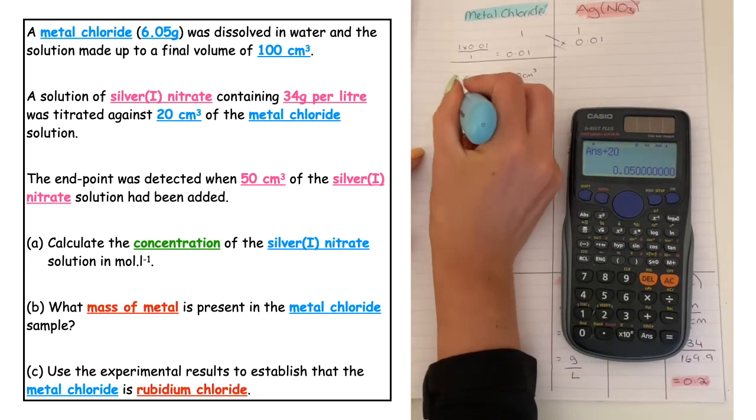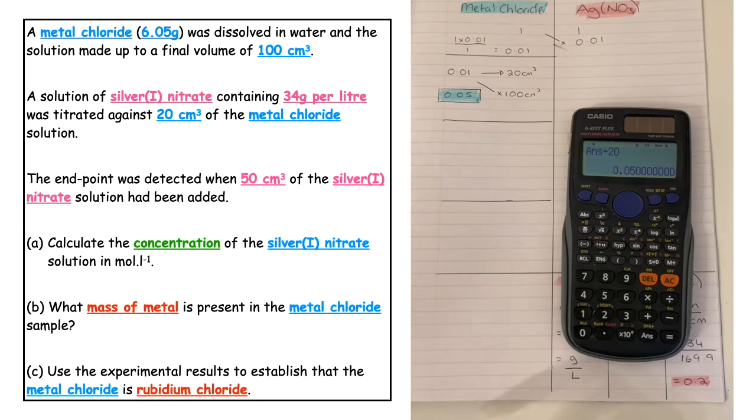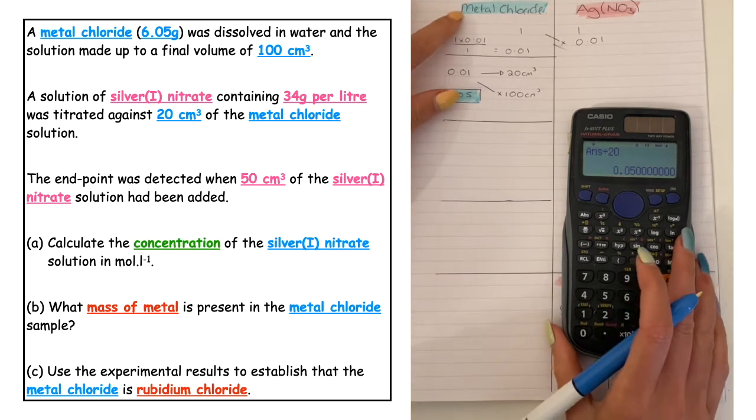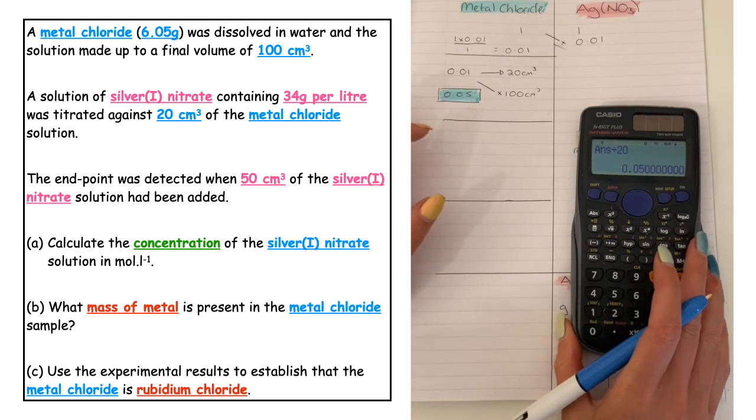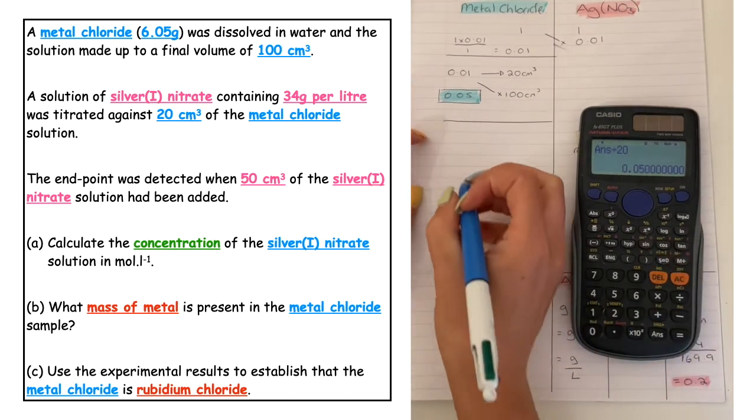The question doesn't ask us about that. The question wants us to calculate the mass of metal. But at this stage it's difficult for us to work out the mass of metal because we don't know any information about the type of metal that's there.